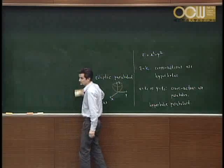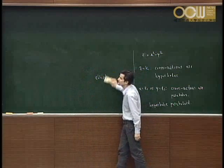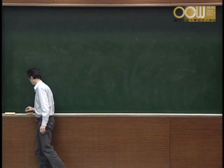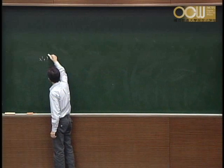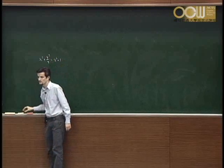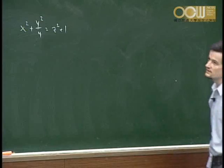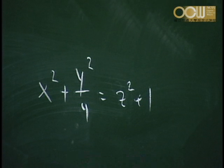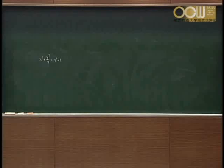For the hyperboloid of one sheet, given by x squared plus y squared over 4 equals z squared plus 1, you can't easily give it as an explicit function of x and y. A better option is to use the implicitplot3D command. You key in the equation, and you must also specify an appropriate plotting window. For z from −1 to 1, the right-hand side has a maximum value of 2, so choose x and y ranges accordingly.